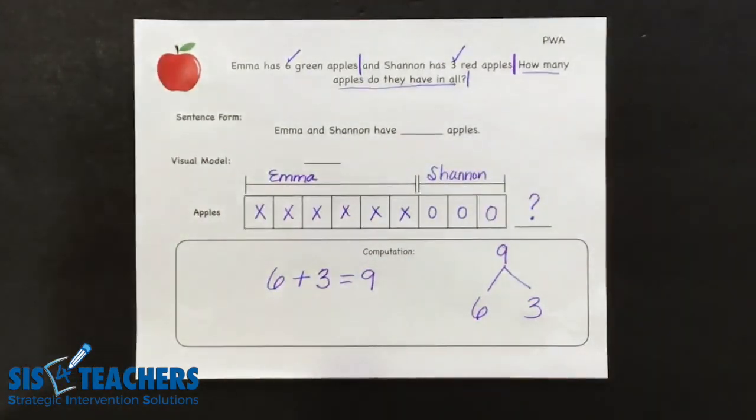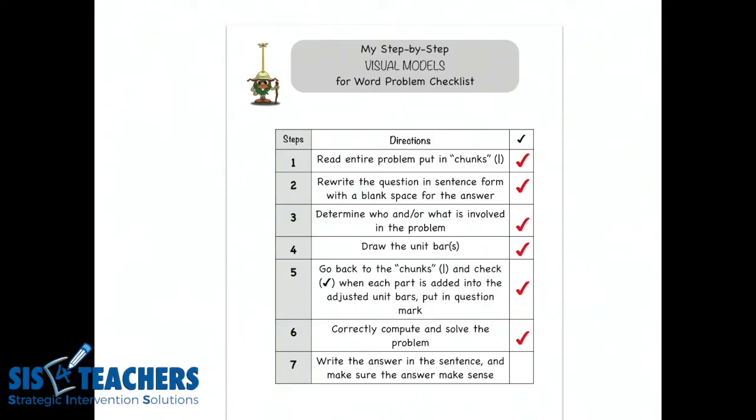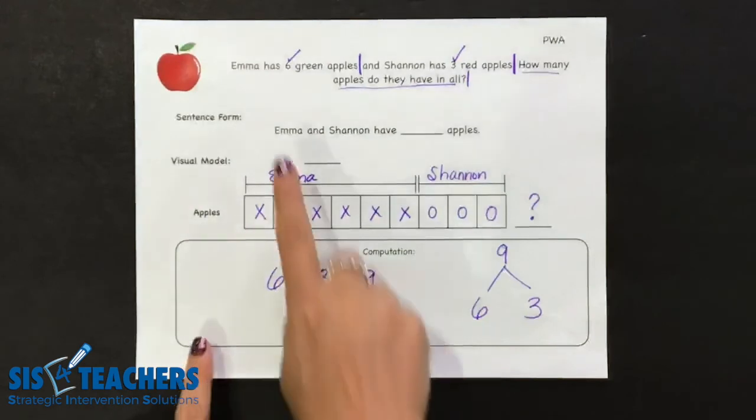Going back to the checklist, we're going to check off that we correctly computed and solved the problem accurately. The last step is a really important step because some kids get really involved in the story problem. They kind of forget what it was they were solving. That's why we have the sentence form. So we're going to go back up to our sentence form that reads, Emma and Shannon have apples.